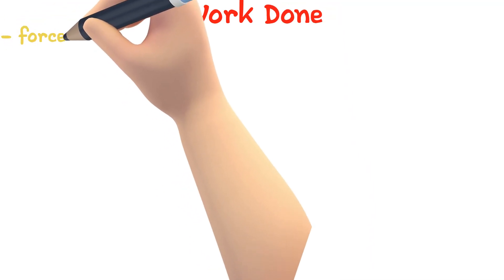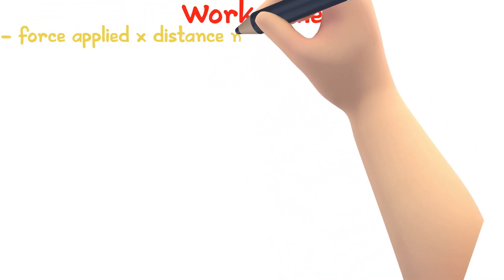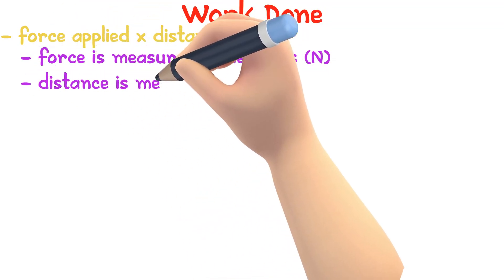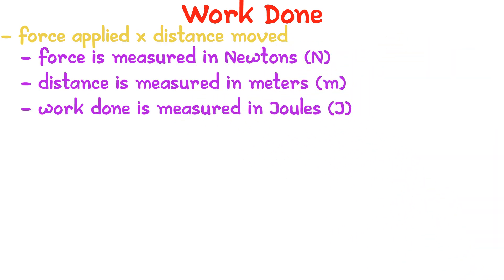Work done is the force applied multiplied by the distance moved. Force is measured in newtons and distance is measured in meters, and work done is measured in joules. Work done is equal to the energy transfer.